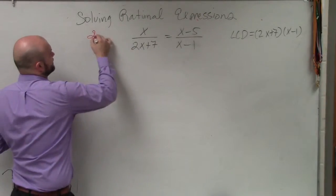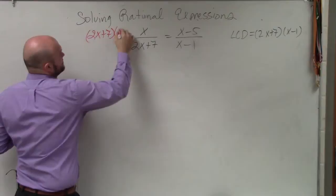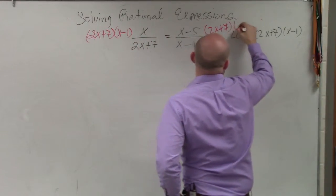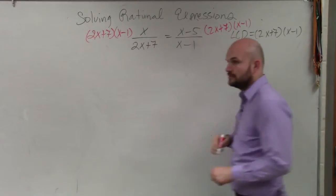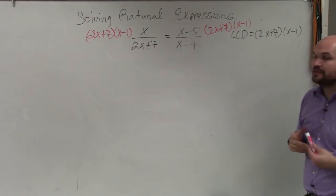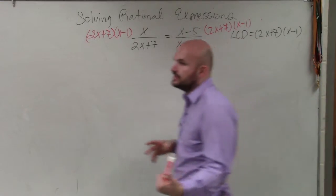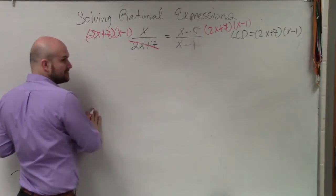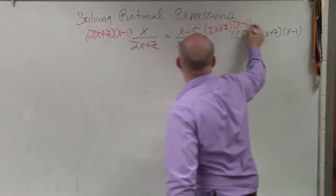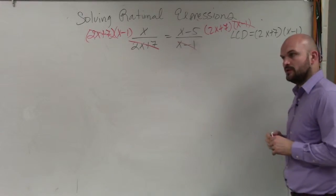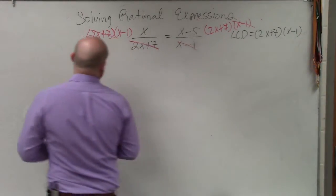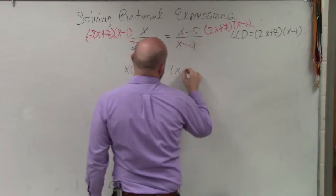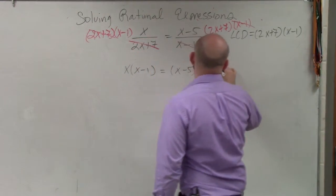So therefore, I have 2x plus 7 times x minus 1, on both sides. Now by doing that, you guys can see we can use the division property. I have 2x plus 7 over 2x plus 7, which divides to 1. I have x minus 1 over x minus 1, which divides to 1. So basically, by doing that, I now have x times x minus 1 equals x minus 5 times 2x plus 7.